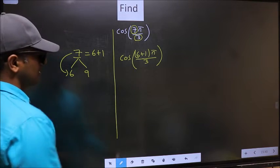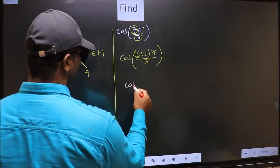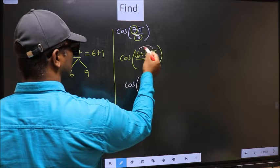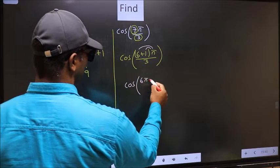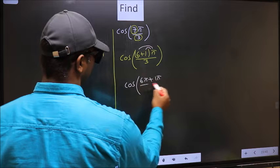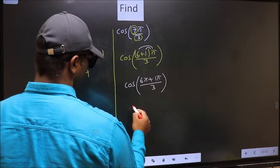Next. Cos. Now you should open the brackets. You get 6π plus 1π by 3. Cos.